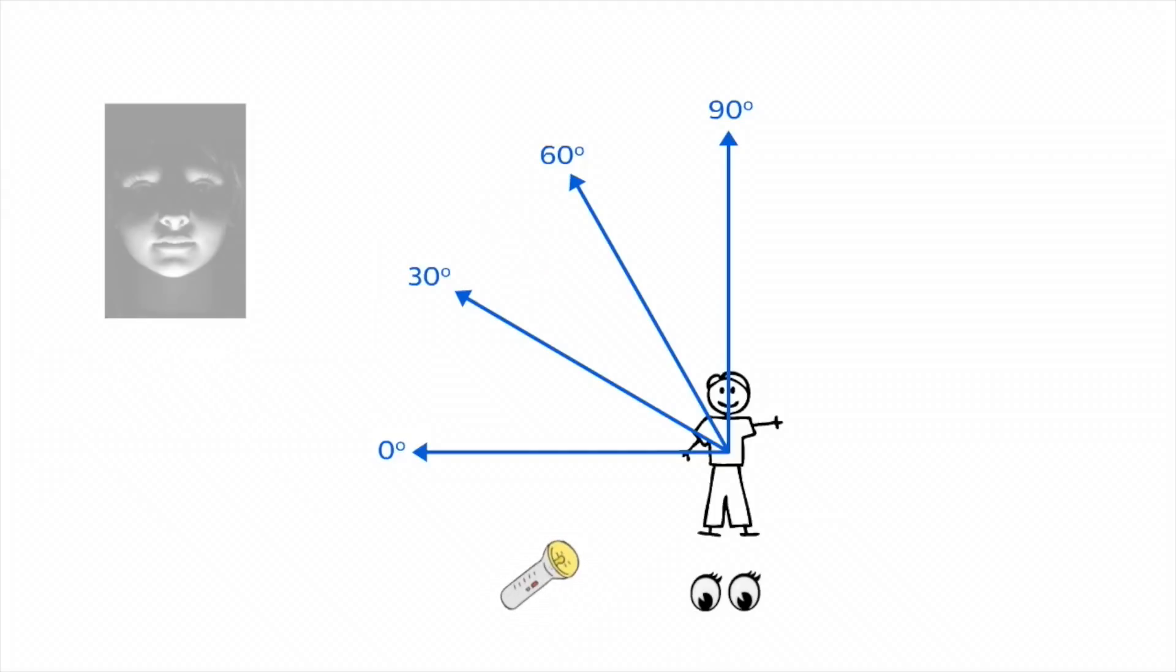Light from below and we produce an unnatural effect. This technique is often used in horror movies or where we want to make the observer question what they are looking at.